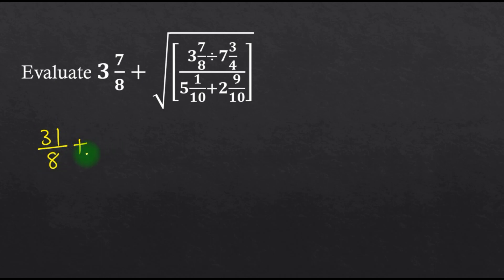Plus the square root of: 8 times 3 is 24, 24 plus 7, that is 31 over 8, divided by...